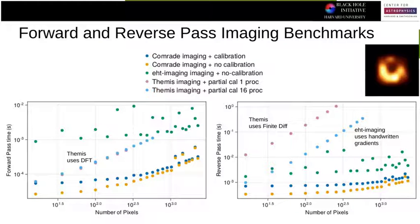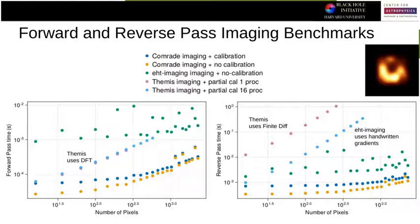In terms of benchmarking as a function of number of pixels, you can see the difference in scalings. EHT imaging just has massive Python overhead I can't get rid of. THEMIS uses a discrete Fourier transform that scales as N² times M where M is the number of data points — it scales horribly. Comrade scales as N log N. When we look at the reverse pass, EHT imaging does fine because it's using handwritten rules, while THEMIS uses finite differences and scales horribly yet again.